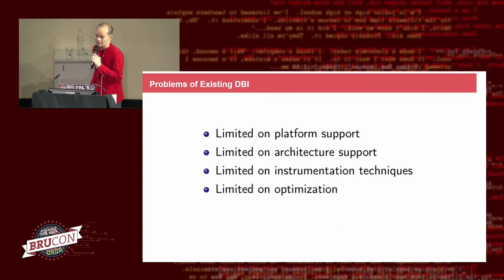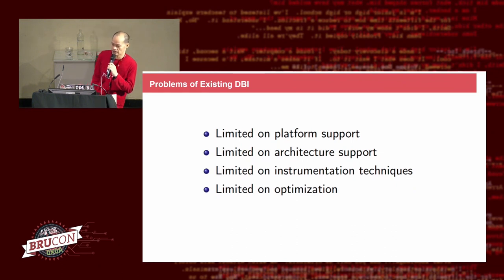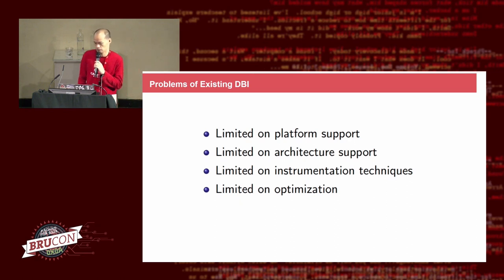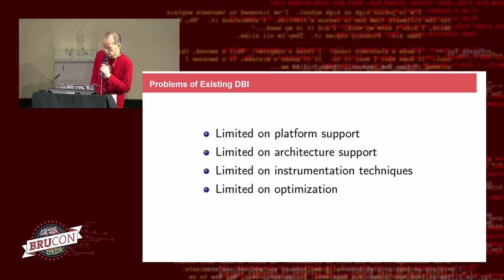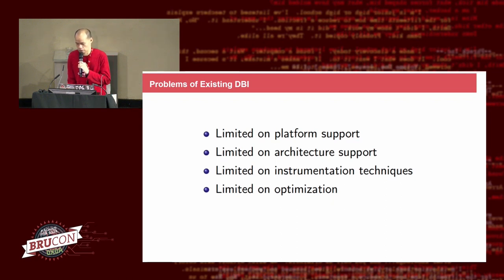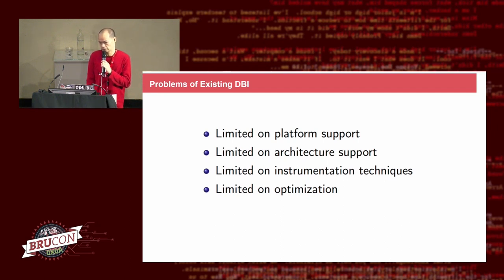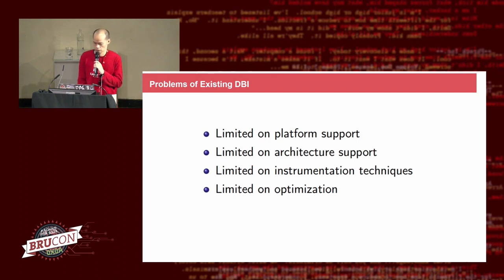Before we built our own DBI, we considered existing DBIs and found issues we didn't like. First, limited platform support: PIN from Intel works well on Windows and Linux but not well on Mac. DynamoRIO doesn't work well on Mac. Valgrind doesn't work on Windows at all — none of them work on every platform. Second, limited architecture support: PIN only works for Intel and to some extent ARM, but not ARM64, MIPS, or PowerPC. Same for DynamoRIO — only Intel and ARM. Third, limited instrumentation techniques: they hide all internal details and don't support all hooking mechanisms. Fourth, they're designed for ease of use but hide many details, giving you very limited capacity to optimize the DBI engine.